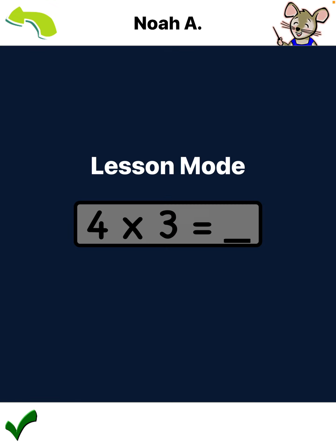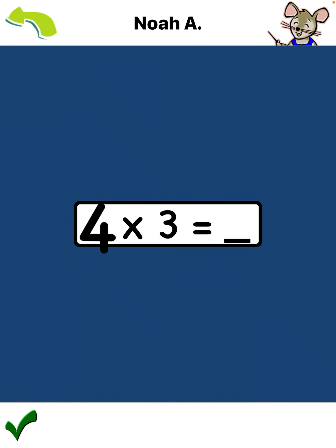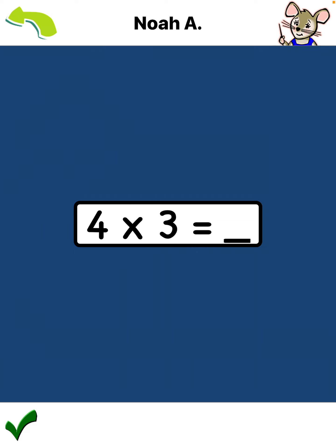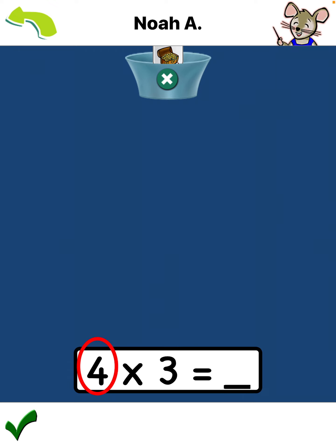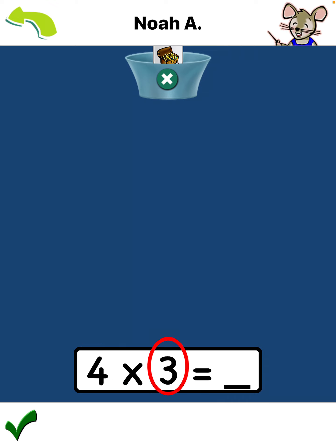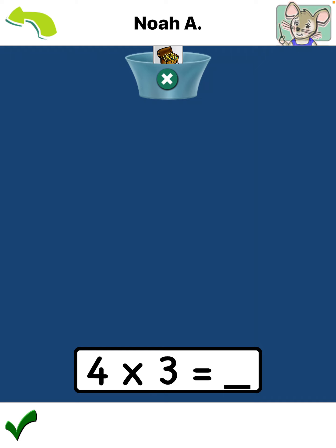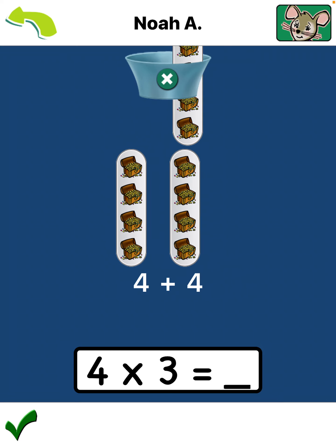This is a multiplication problem: four times three. One way to think about multiplication is that you are adding groups of items. This number tells us that each group should contain four items. This number tells us that we need three groups. Tap here until you have added three groups: one group, two groups, three groups.